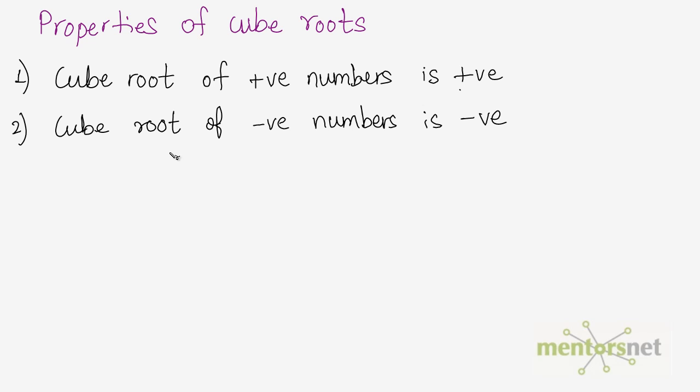So if I have the cube root of minus 1, it is minus 1. Or if I have the cube root of minus 27, it is minus 3. So 3's cube is 27, minus 3's cube is minus 27. Hence the cube root of minus 27 is minus 3.